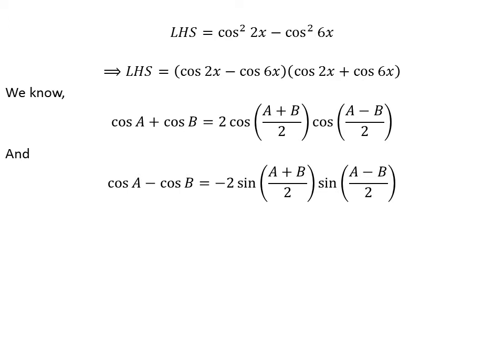We also know the famous trigonometry identity: cosine of a minus cosine of b is equal to minus 2 times sine of half of (a plus b) times sine of half of (a minus b).